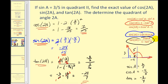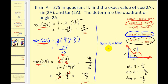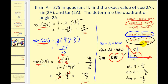The last part asks for the quadrant of angle two A. Angle A is in the second quadrant, so angle A is between 90 and 180 degrees. Multiplying each bound by two, angle two A is between 180 and 360 degrees, placing it in quadrant three or quadrant four. Since cosine two A is positive, the x-coordinate must be positive, so angle two A must be in the fourth quadrant.